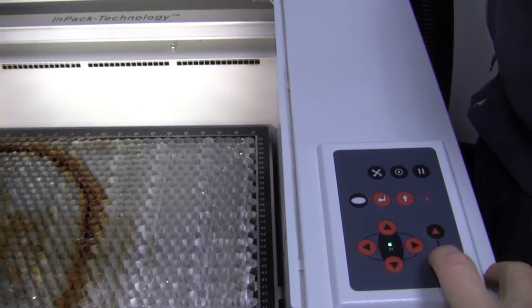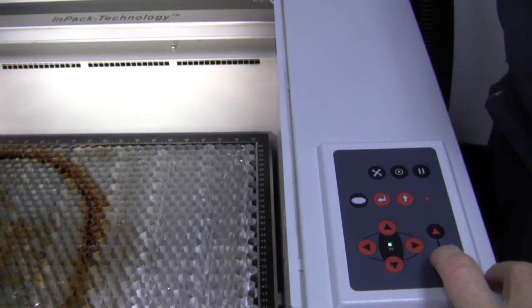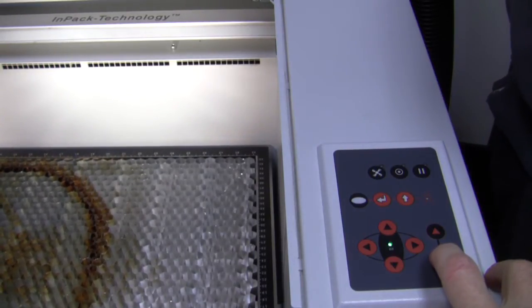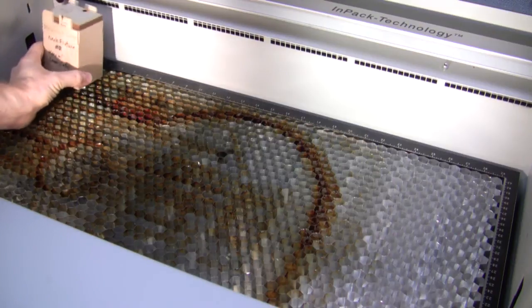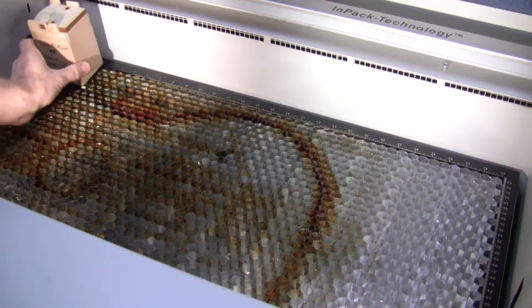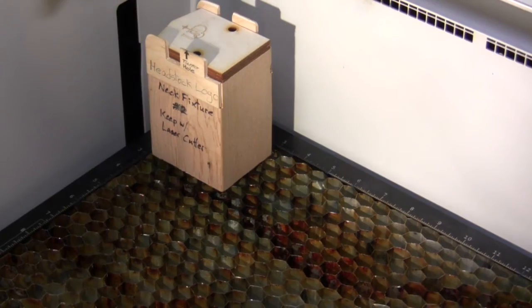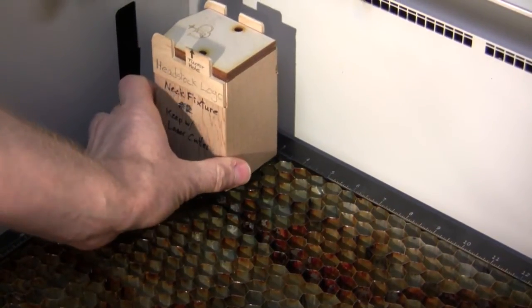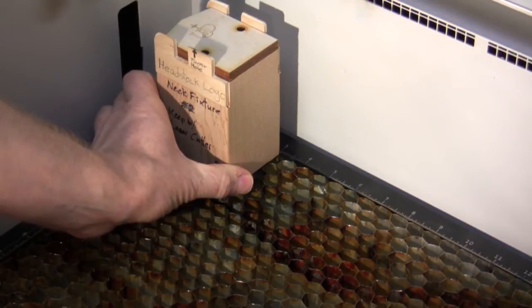First we need to lower the table because this takes up more room. So go down a couple of inches or so. Install that block and that goes in the far left hand corner, again against the ruler guides. Be gentle with the honeycomb. It goes on the inside of the ruler guides.